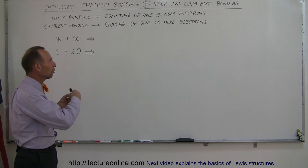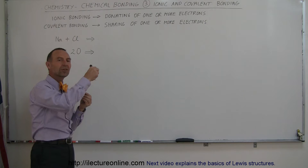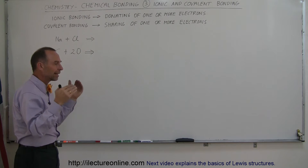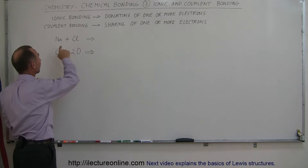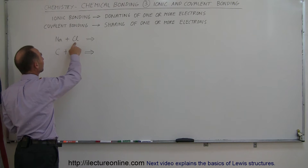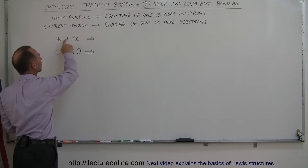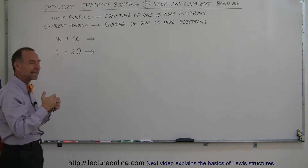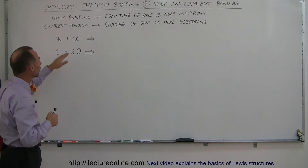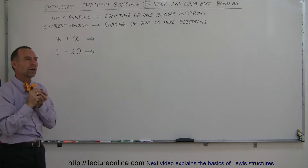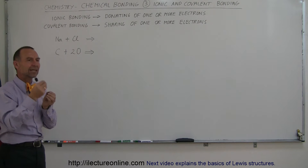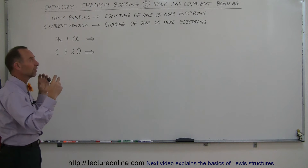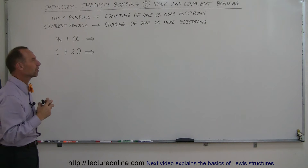When one atom donates an electron to another atom, we call that ionic bonding. For example, here we have sodium and chlorine. Sodium will donate an electron to chlorine, so sodium will be minus one electron, meaning it's now going to be a cation or positive ion. Chlorine is going to gain an electron, so now it becomes a negative ion. Positive ions and negative ions will attract each other, and that's the mechanism of the bonding process.